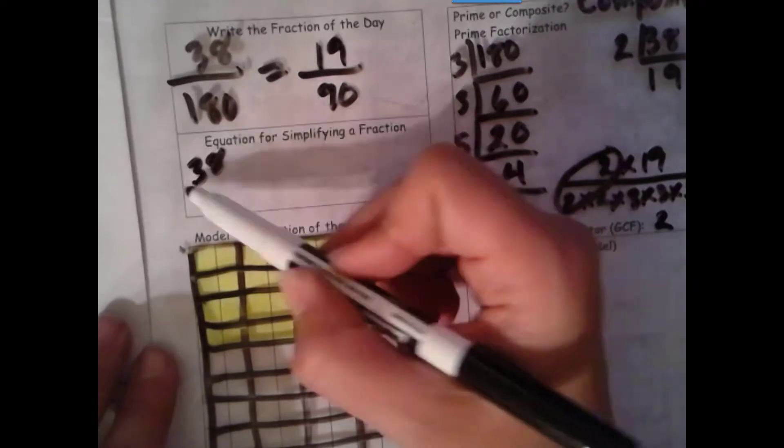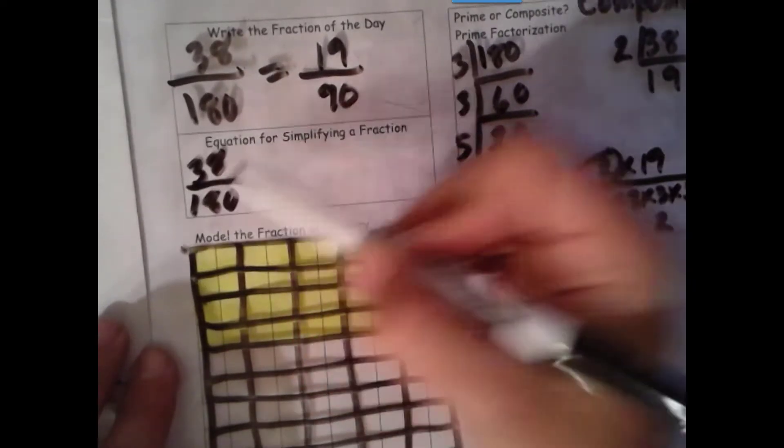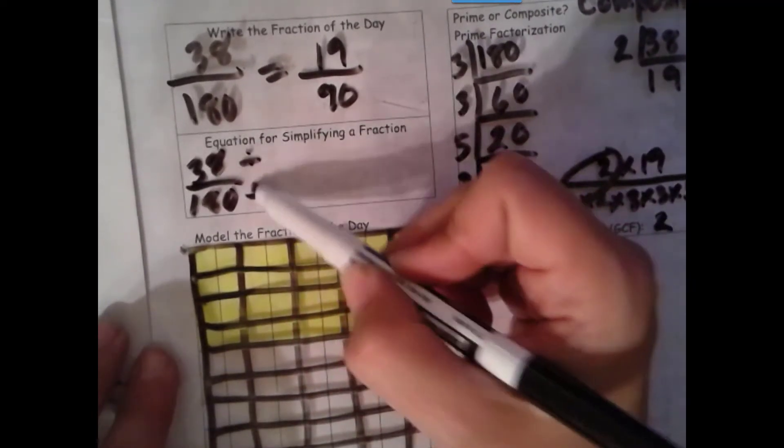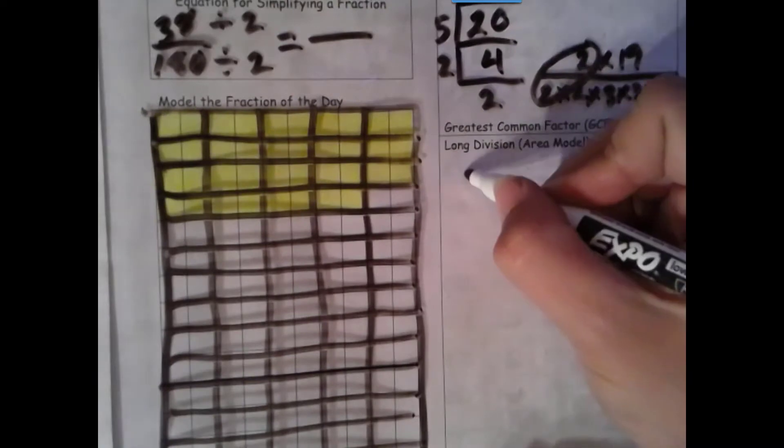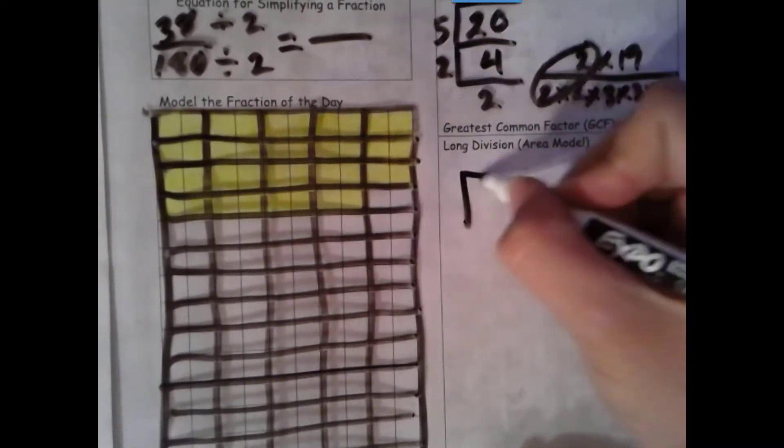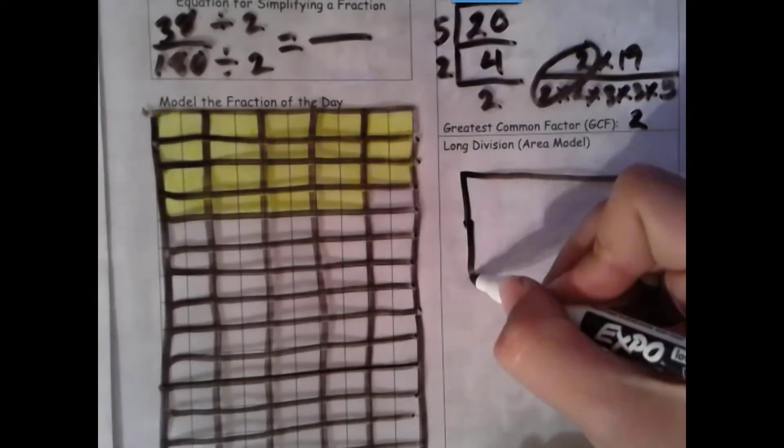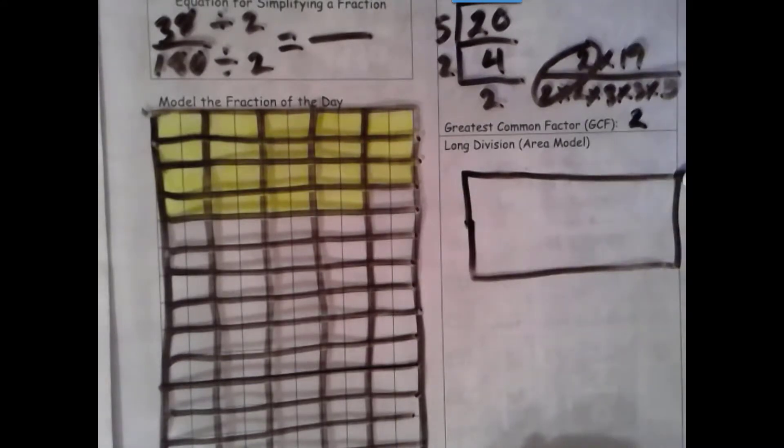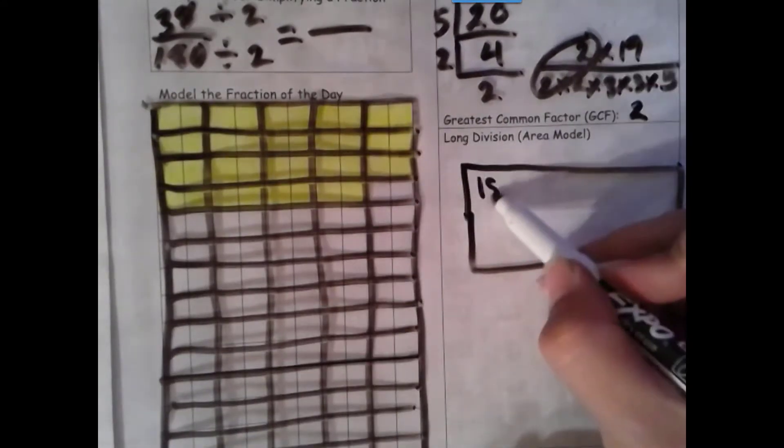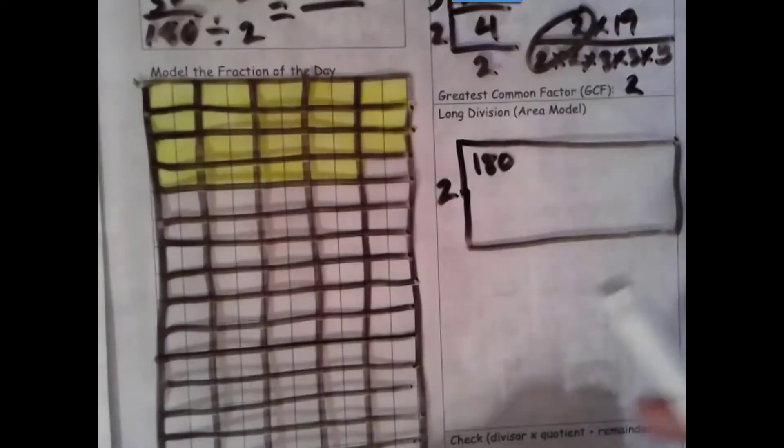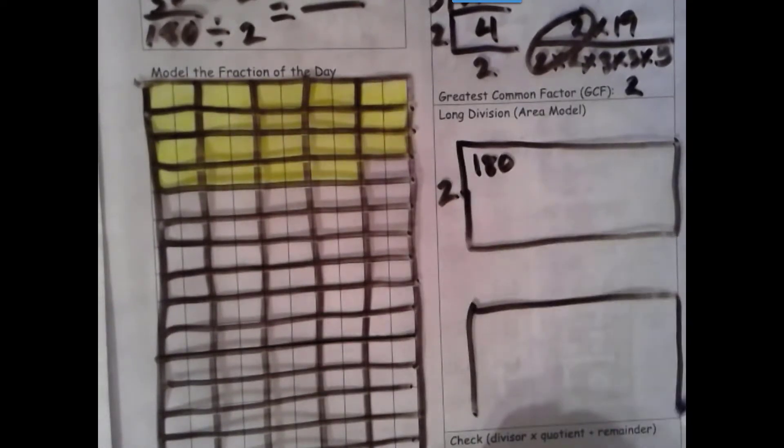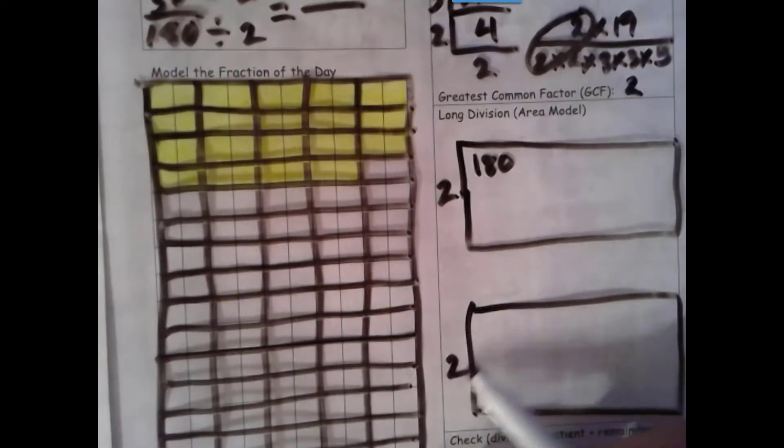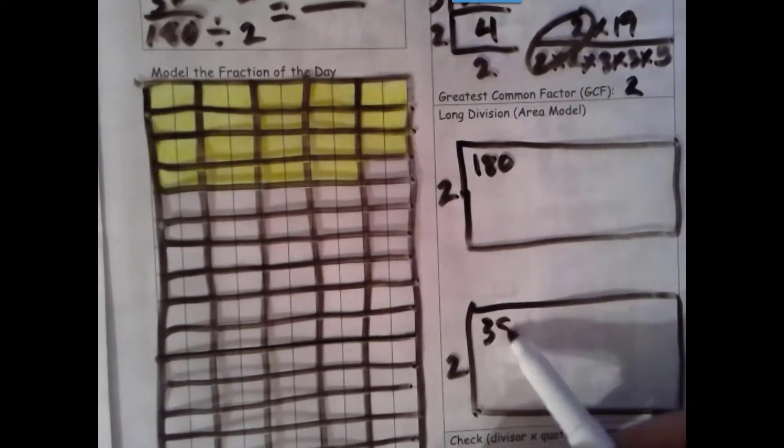Now let's go ahead and do it with our algorithm. We're going to divide each by our greatest common factor. Okay, so we're going to divide using that area model. So 180 divided by 2, and 38 divided by 2.